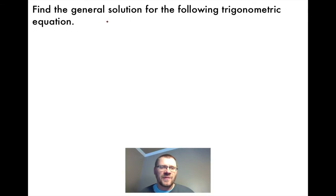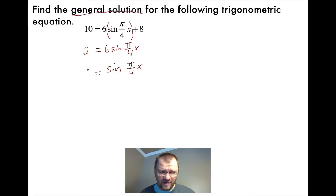Here's our example about solving a trigonometric equation algebraically. We're going to find the general solution for the following trig equation: 10 = 6sin(πx/4) + 8. What we're going to try and do is isolate our sine of our angle, and our angle just happens to be π/4 x. To do that, we just manipulate this thing algebraically. We subtract 8 from both sides, we get 2, and then we divide both sides by 6. We get sin(πx/4) on the right-hand side, and on the left, we get 1/3.